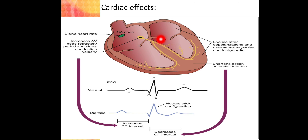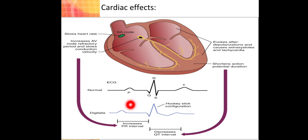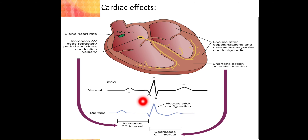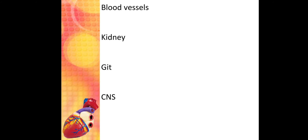These cardiac effects are reflected in the ECG. Compared to the normal ECG, digitalis increases the PR interval due to delayed AV conduction, and decreases the QT interval due to a shorter ventricular systole. There may also be slight ST depression. This produces the characteristic 'hockey stick' configuration on the ECG.